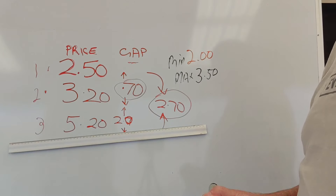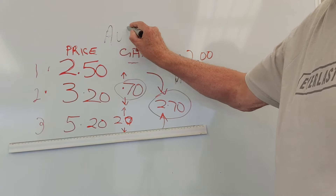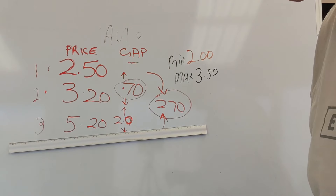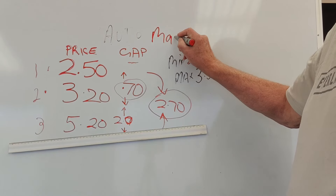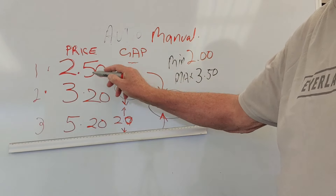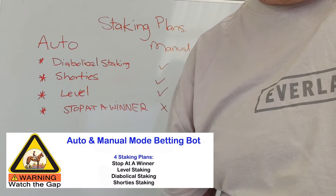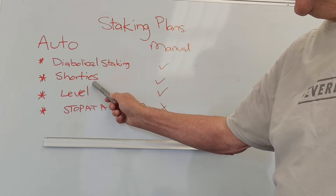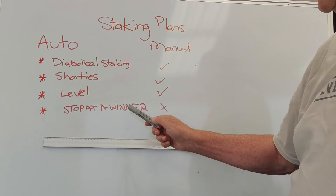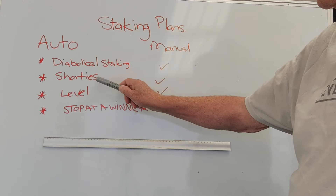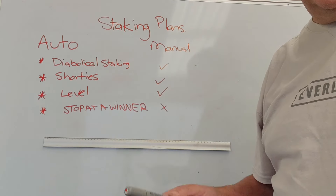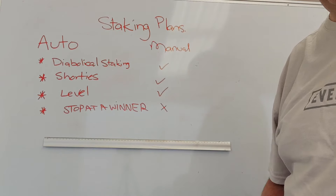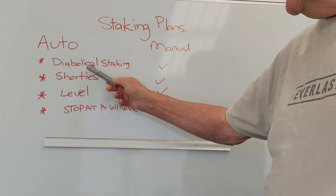You can use it in the win market, in the place market, and in the auto section. We have an auto and a manual option, and you can use these settings in both. For the staking plans, in the auto section we have the Diabolical staking plan, Shorty staking, Level staking, and Stop at a Winner. In the manual we have just the top three: Diabolical, Shorties, and Level staking. In the page down below you'll see links to these staking plans so you can find out more about them.